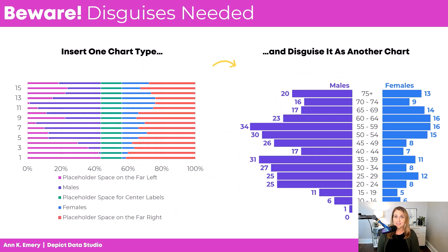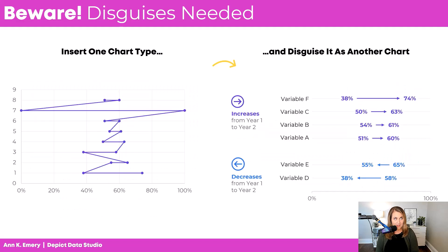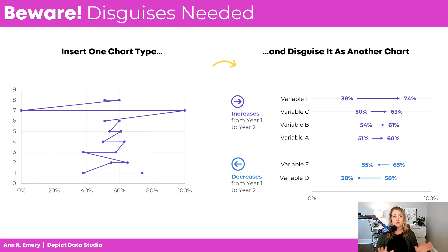Beware — you have to do some behind-the-scenes elbow grease to make this possible. You're going to have to insert one chart type and then disguise it as another. For example, if you insert a stacked bar chart, you can format it to look like a population pyramid. Or if you add a scatter plot, you can format it to look like a dot plot. This is a really advanced, sophisticated way of thinking about Excel. It requires some mental gymnastics and requires the tables that feed into your charts to be formatted completely differently from what you're used to. That's why you're not going to start here — you're going to start with some of the more beginner and intermediate built-in charts first.